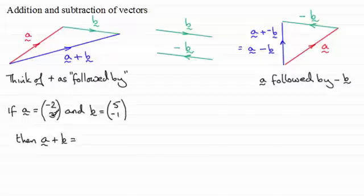Well all we need to do is just add the top elements together and the bottom elements together. We add the components. So we're going to have -2 plus 5, that's going to give us 3, and then 3 plus -1 gives us 2. So we've got that column vector (3, 2).